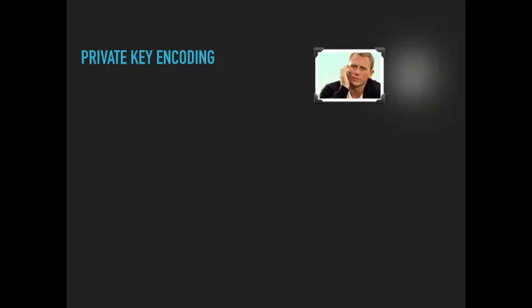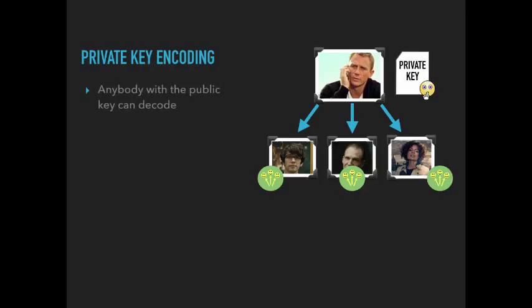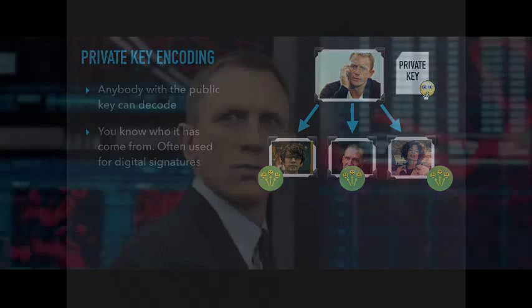Now let's have a look at private key encoding. Mr. Bond uses his private key to encode. Q has his public key so he can decode it. M has his public key so he can decode it. And of course, Miss Moneypenny also has the public key. The advantage of this is that these three people are absolutely sure that the message came from James Bond.